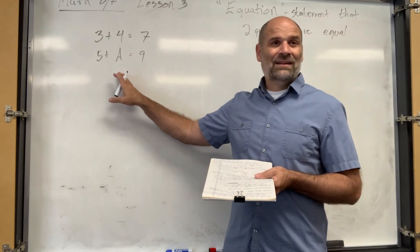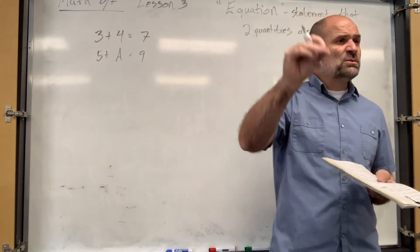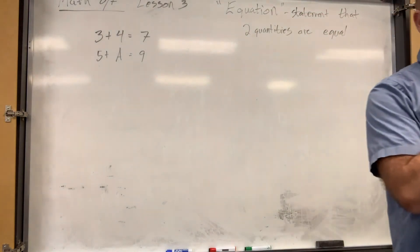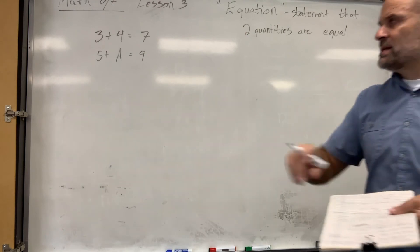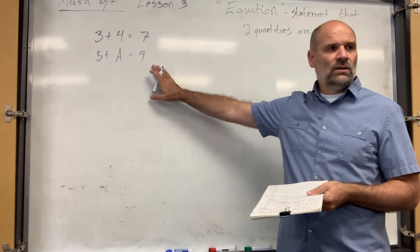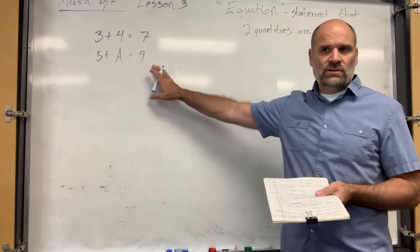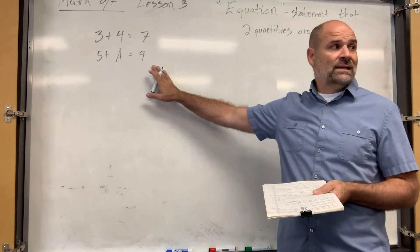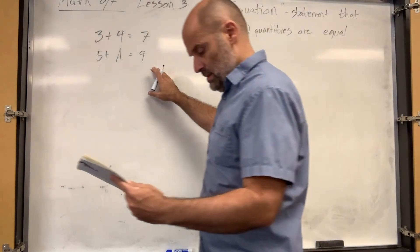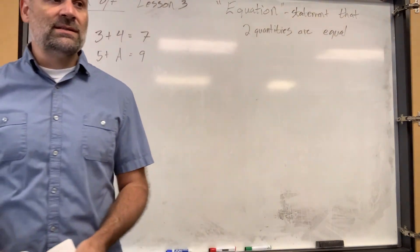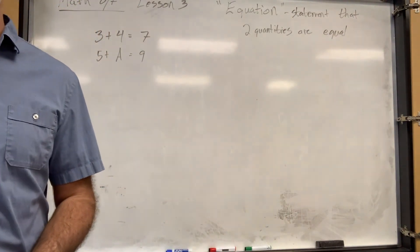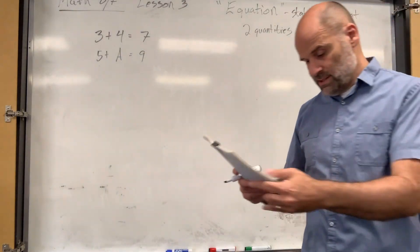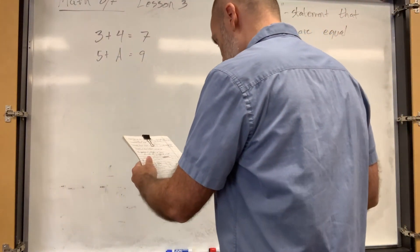A equals four. Yeah — if a equals four, then this is true. But it's still an equation no matter what. We just have a different name for this: it's called a conditional equation. The condition is, if a equals four, then it's a true equation. If it equals anything else, it's still an equation, but we call it a false equation. If a is three, it's still an equation, but it's a false equation.